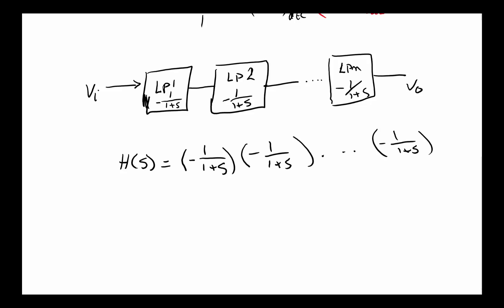So yes, we could make the slopes sharper by multiplying this and basically ending up with N being the number of stages. This will be N and it will be 1 plus S to the N. So this would be a minus N times 20 dB drop-off.